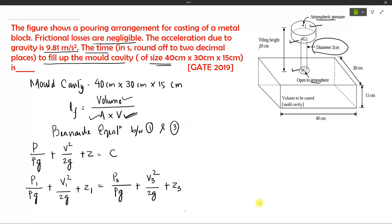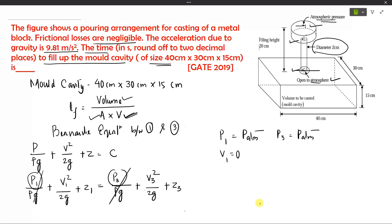At point one, the pressure is atmospheric, so p1 = p_atm. At section three, it is also open to atmosphere, so p3 = p_atm. Therefore, p1/ρg and p3/ρg cancel out. At point one, the molten metal is poured and remains briefly before flowing through section two and into the mold cavity, so practically the velocity at point one is zero — v1 = 0, and that term also drops out.